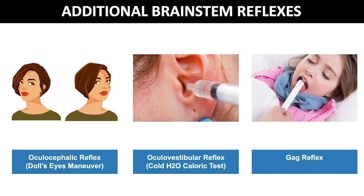The gag reflex can be measured using a laryngoscope and tongue depressor to determine functions of cranial nerves 9 and 10.